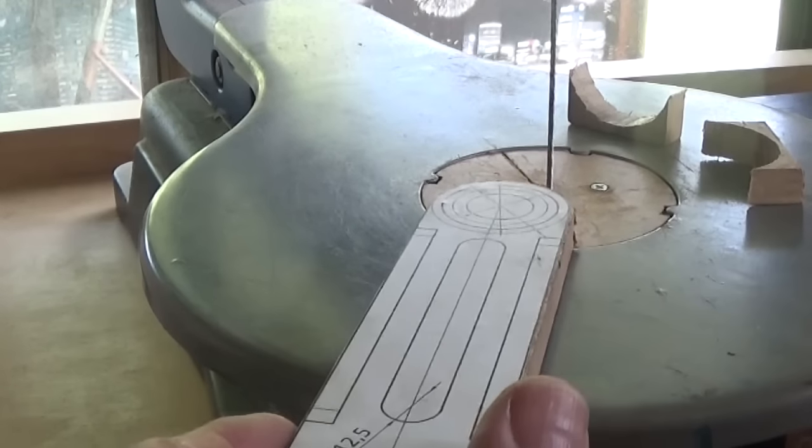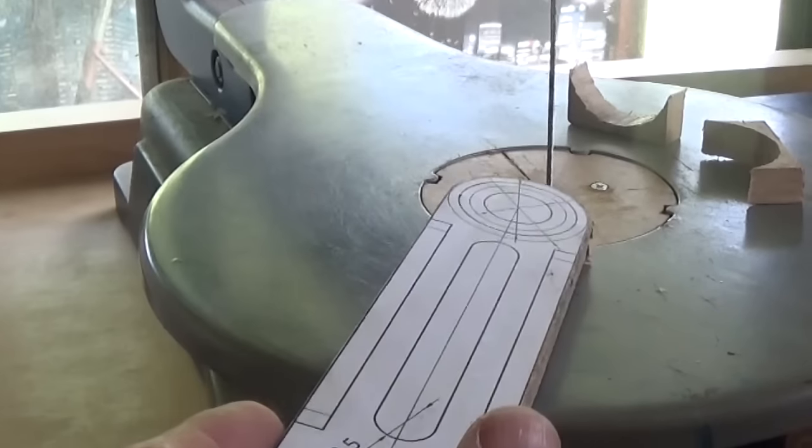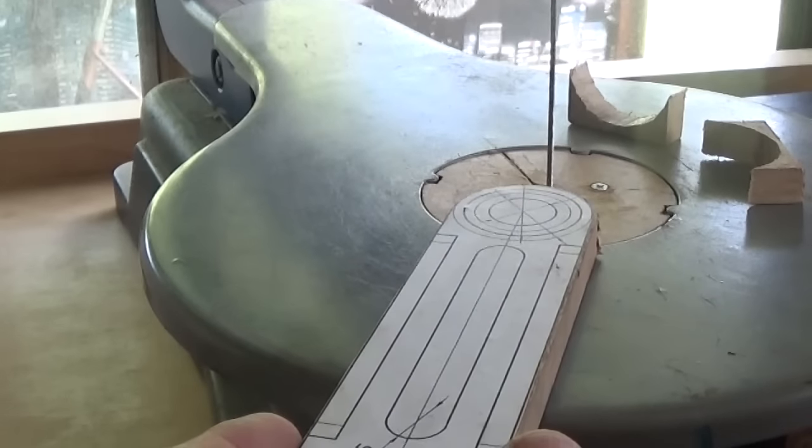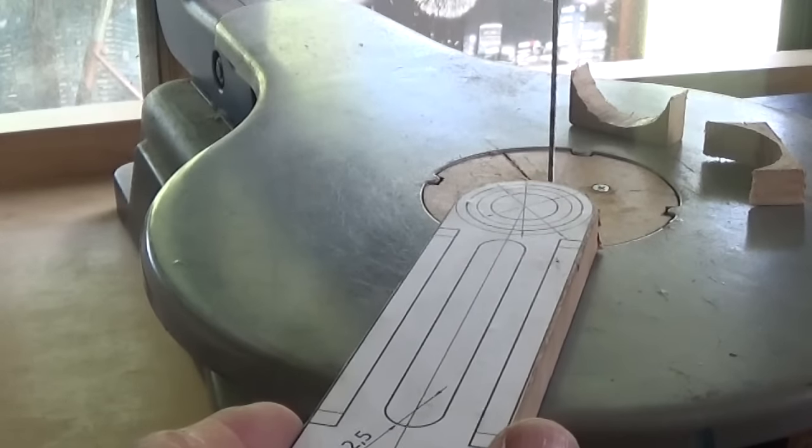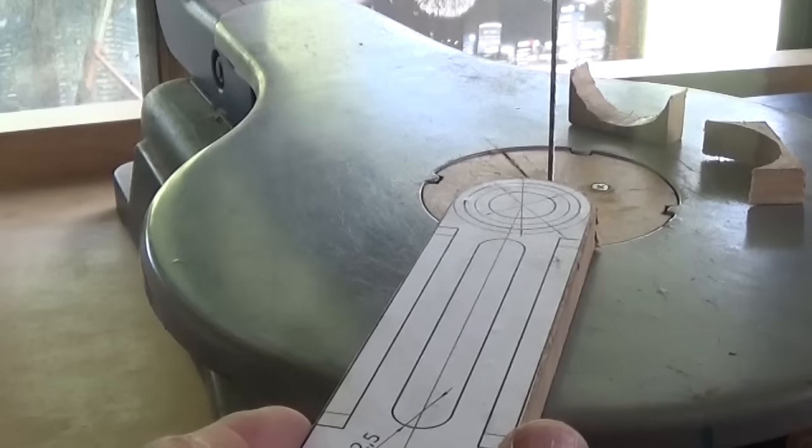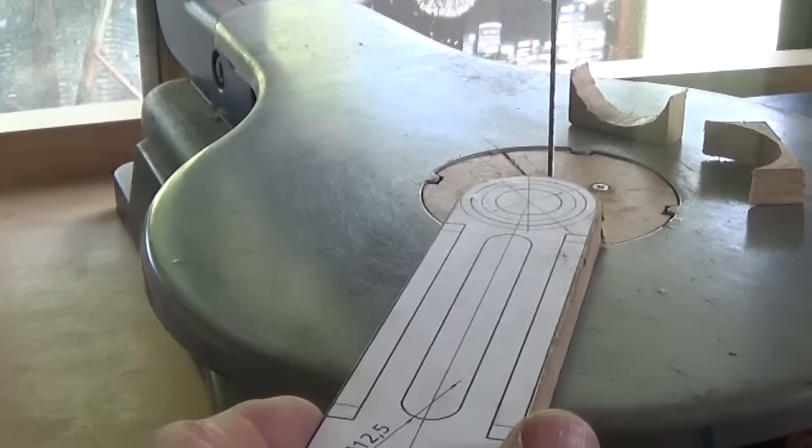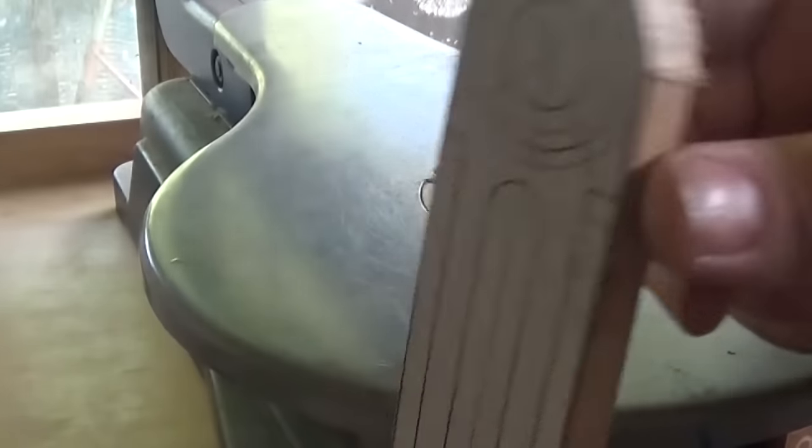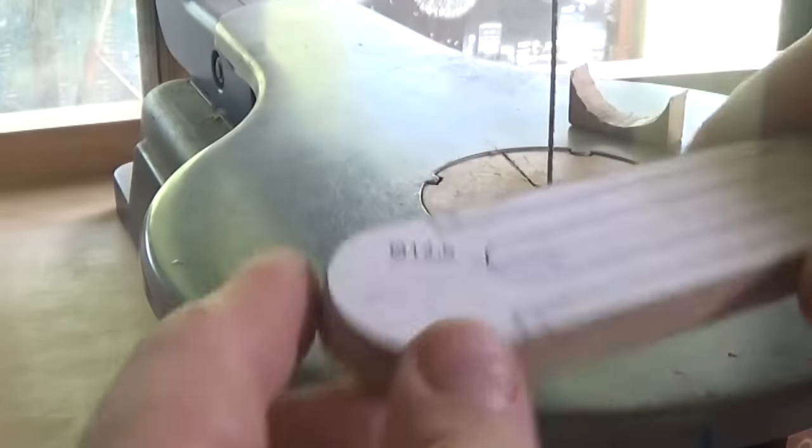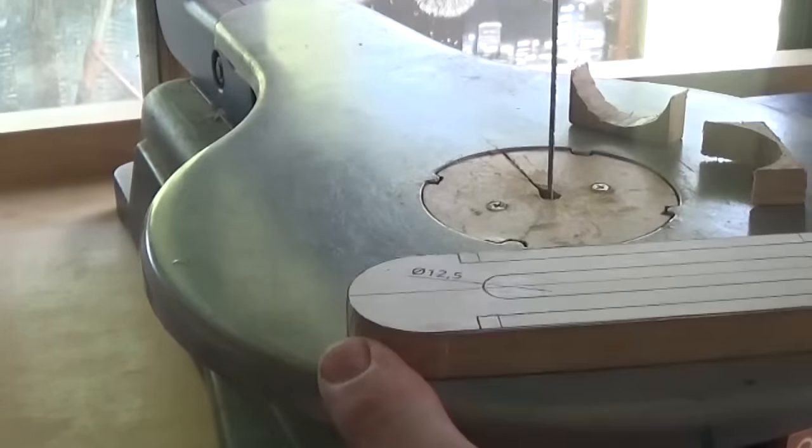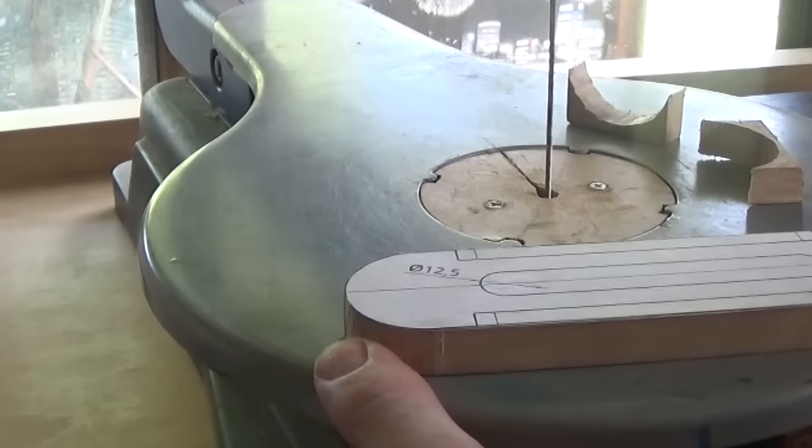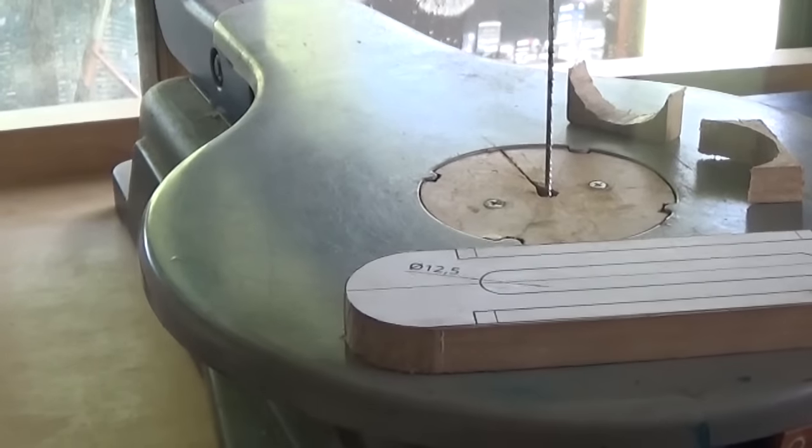One thing I've learned about scroll saws is with a bit of thicker material, slow them down a bit. This one's variable speed. Start pretty slow, then speed it up until it just starts to feel like you've only just got control and slow it down a bit more. That's the way to get reasonable results with the scroll saw. Next job is to drill some holes I guess.